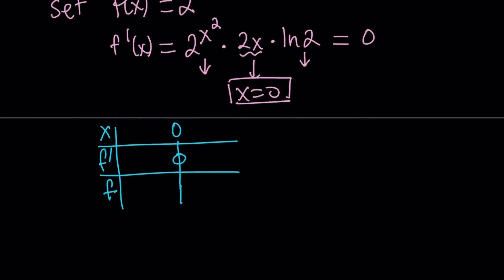Looking at the derivative, if x is positive, this is positive, this is positive, right? Because 2 is greater than 1. Our derivative is going to be actually positive. f prime is going to be positive. So we're going to start with a positive sign here, and if x is negative, our derivative is going to be negative.